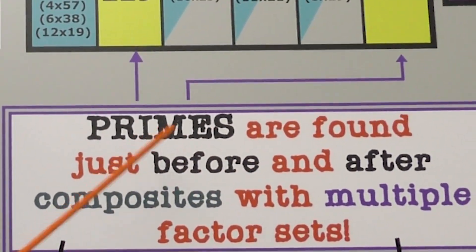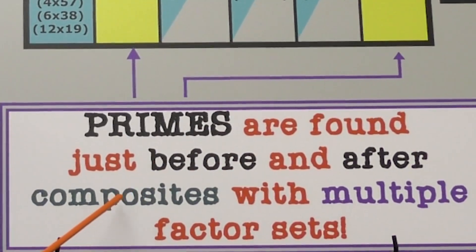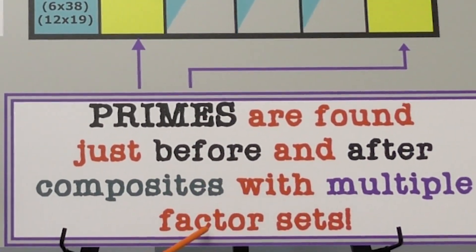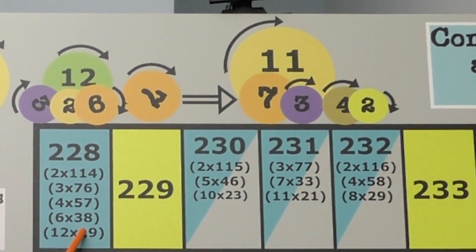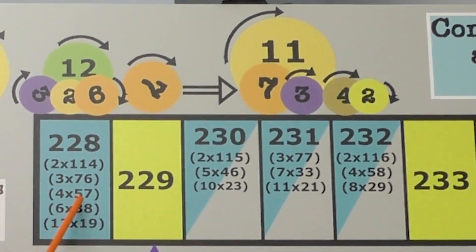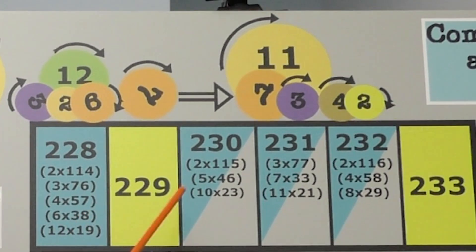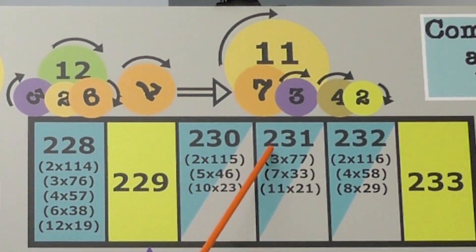Now here's an interesting pattern to notice. Primes are found just before and after composites with multiple factor sets. Here is multiple factor sets. There are one, two, three, four, five factor sets. One, two, three factor sets.